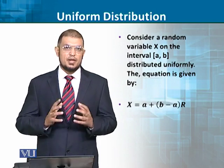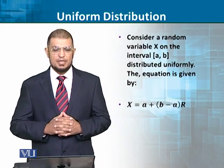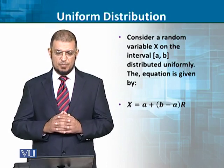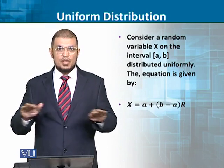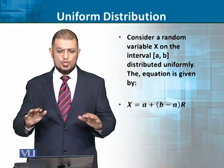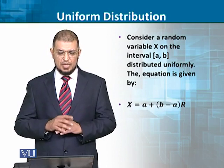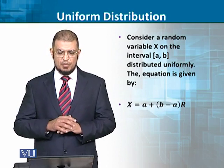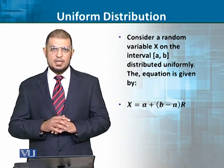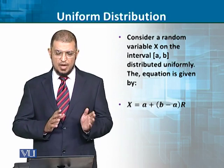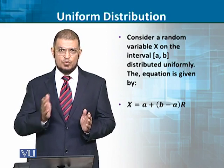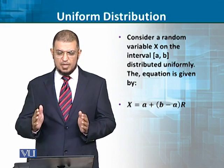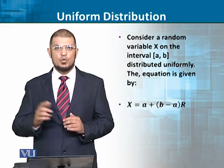If you take a random variable x and give it an interval from a to b, and if you say that it is uniformly distributed, then we can write: x is equal to a plus (b minus a) times r, where a is the lower bound.